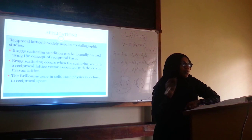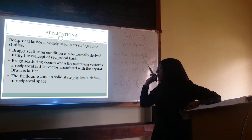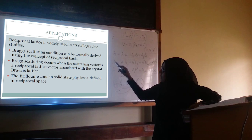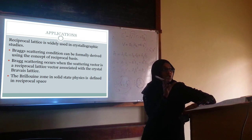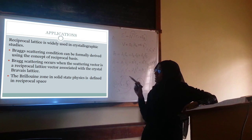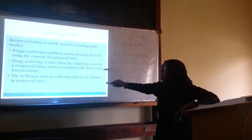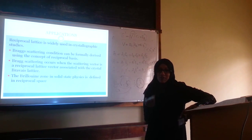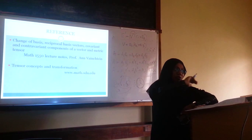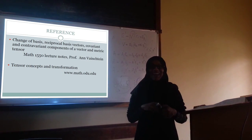Now, a few applications of the reciprocal basis: In solid-state physics, the reciprocal lattice is formally derived using the concept of reciprocal basis and is used to study crystallography and Bragg scattering conditions. Bragg scattering occurs only when the scattering vector is one of the basis vectors of the reciprocal lattice. The Brillouin zone is another application, defined using the reciprocal space. Thank you for patiently listening. Have a great day.